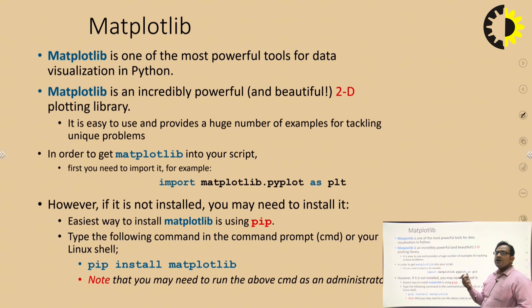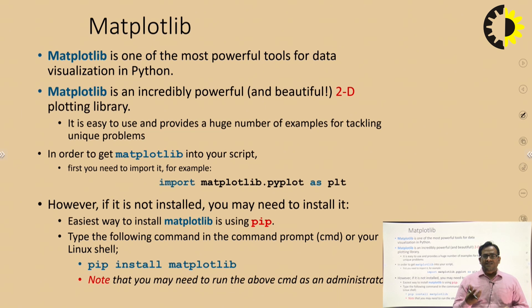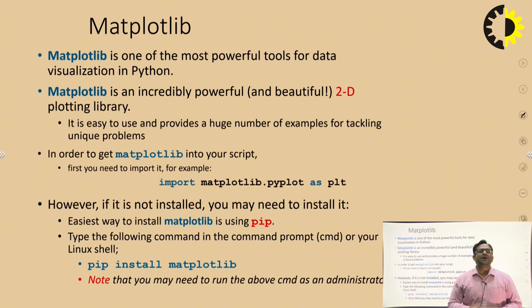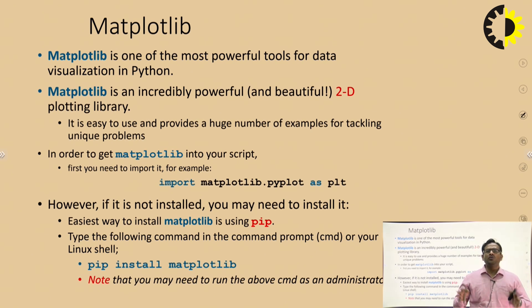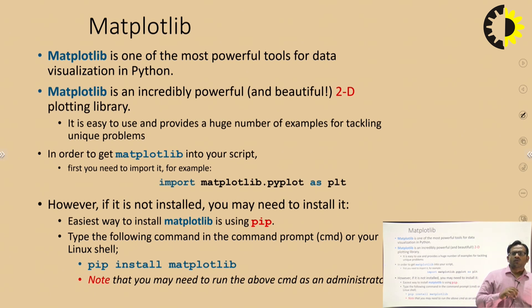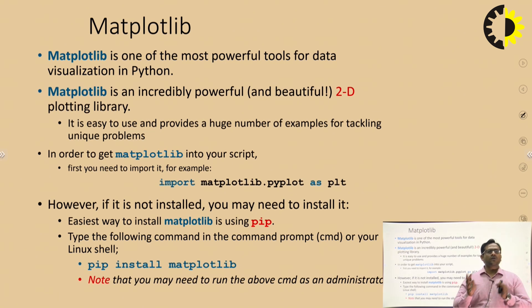What is matplotlib? It is basically one of the most powerful tools for data visualization in Python. We can say it is a library which provides a lot of functions that you can use to create graphs. It is basically a 2D plotting library that is easy to use and provides a huge number of examples to tackle unique problems, like creating bar graphs, pie charts, or scatter plots.